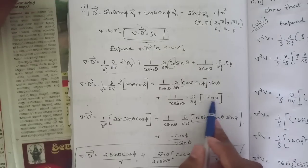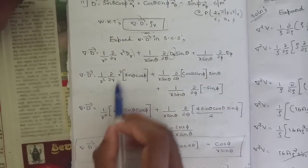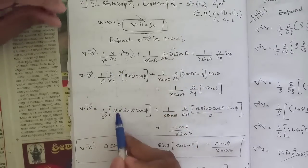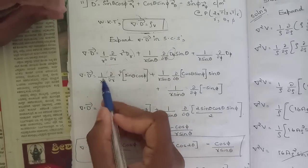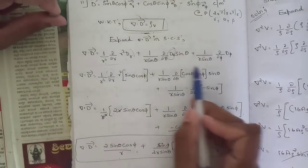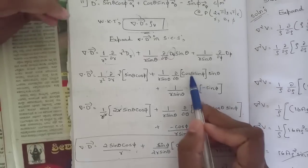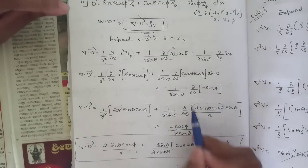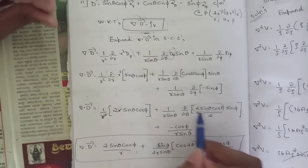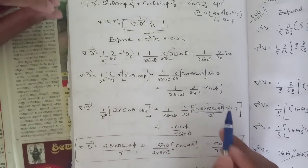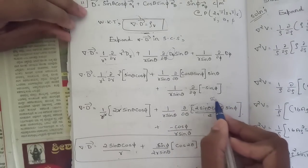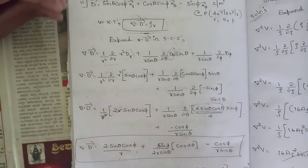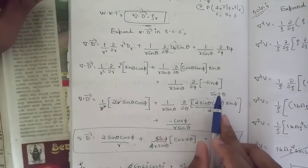Multiplying r² into the first term gives r² sinθ cosφ. Differentiating with respect to r gives 2r sinθ cosφ; dividing by r² leaves (2 sinθ cosφ)/r. For the θ term: the product Dθ sinθ = cosθ sinφ · sinθ = sin φ · sinθ cosθ. Writing sinθ cosθ = (1/2)sin2θ allows differentiation: ∂/∂θ of sin2θ = 2cos2θ.